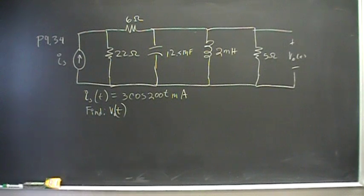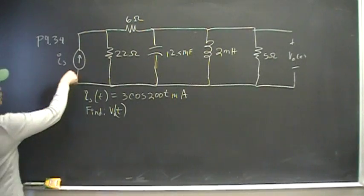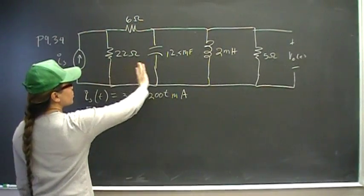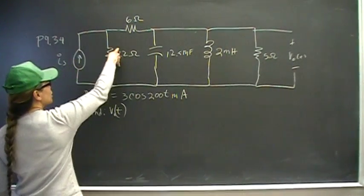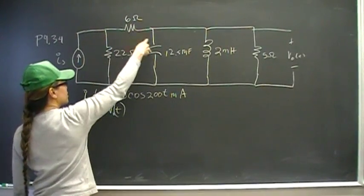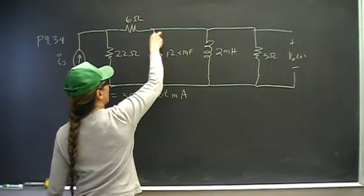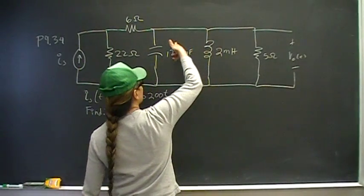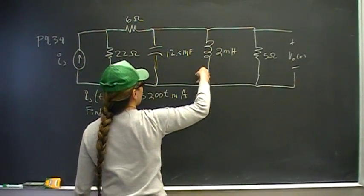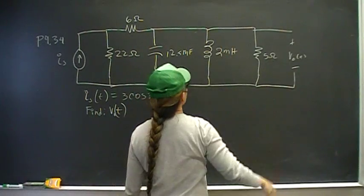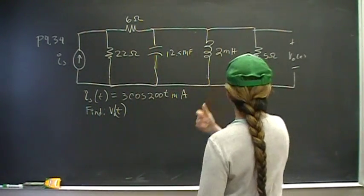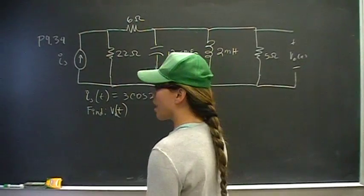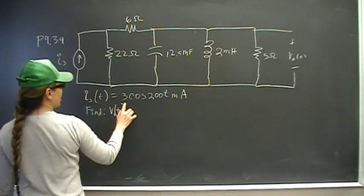Hi, this is problem 34 from chapter 9. We have a current going through this circuit which has a 22 ohm resistor here, 6 ohm resistor here in parallel, in series with a parallel 12.5 millifarad capacitor, a 2 millihenry inductor, and a 5 ohm resistor.